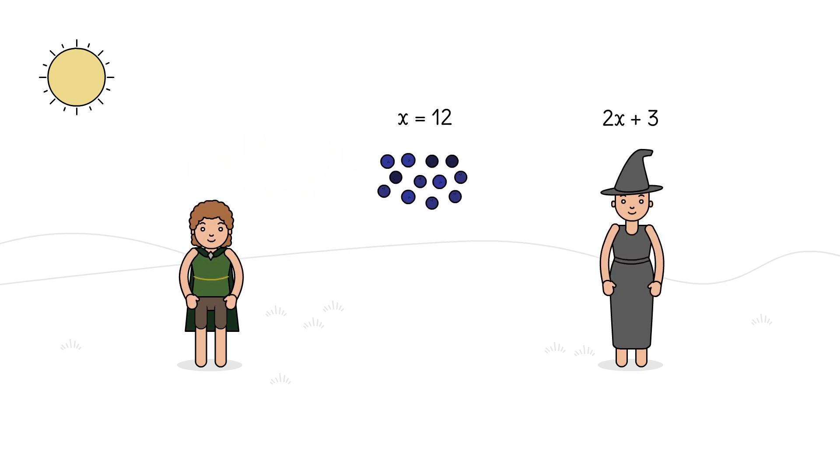Devon tosses his blueberries in the air and the wizard performs her magic operations, evaluating the expression for a value of 12. 2 times 12 is 24.